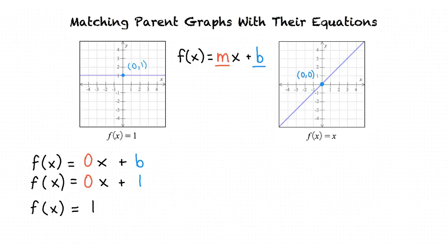The slope for f(x) = x is 1, so 1 is our m value. Substituting 1 for m and 0 for b gives f(x) = 1x + 0. Since 1 times x equals x, and x + 0 is still x, the final result is f(x) = x. The key characteristics are a slope of 1 and a y-intercept at the origin (0, 0).